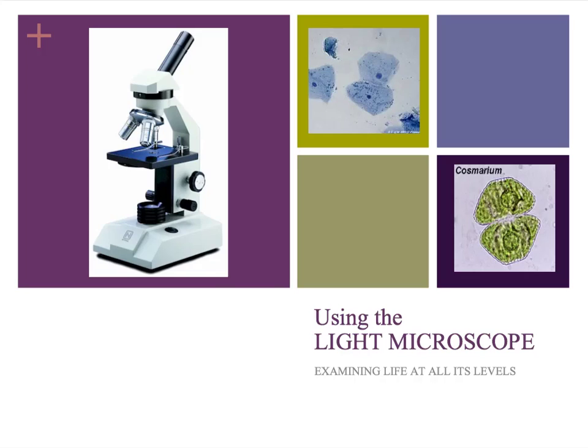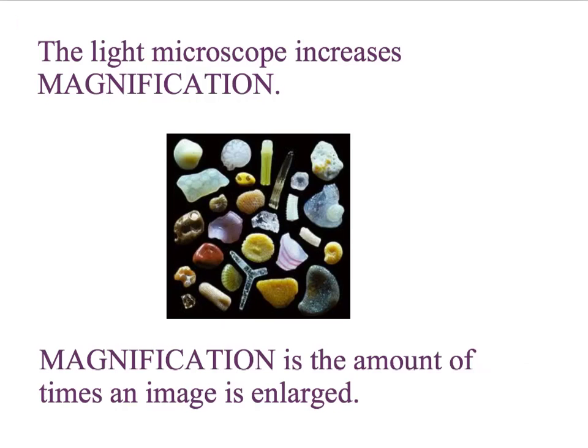This video is about using the light microscope. Size is the dimension of an object, and sometimes when objects are small, we may need a light microscope to increase the magnification. The magnification is the amount of times the image is enlarged, and the lenses on our microscope will make that happen.